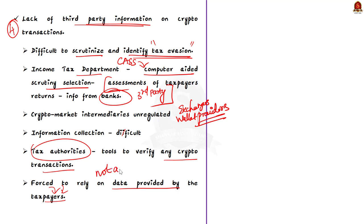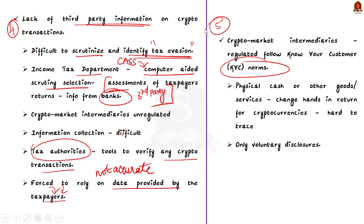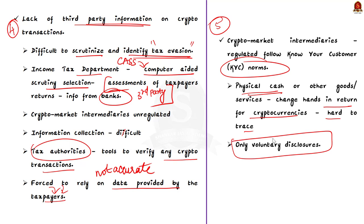The fifth challenge is that even if crypto market intermediaries are regulated and asked to follow KYC norms, there is a scenario where physical cash or other goods or services may change hands in return for cryptocurrencies. Such transactions are hard to trace, and only voluntary disclosures from the parties involved may reveal the tax evaders.